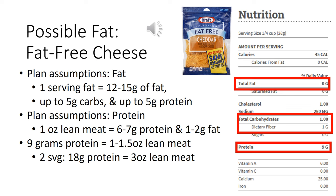One final question I get regularly: what about fat-free cheese? Your fat-free cheese obviously would not count as a dietary fat because it has zero grams of fat. What it would count towards is your protein. One quarter-cup serving of this particular brand of fat-free cheddar has nine grams of protein, which is technically one-and-a-half ounces of lean meat, but if you want to be flexible you can count it as just one ounce. A full half cup gives you 18 grams of protein — a full three ounces of lean meat. It's a nice option if you're looking to spice things up. I hope this presentation helped clear up some of the questions you have regarding how to figure out if a certain food can fit into your diet plan. Thank you for choosing RP and I hope you guys meet all of your body composition goals.